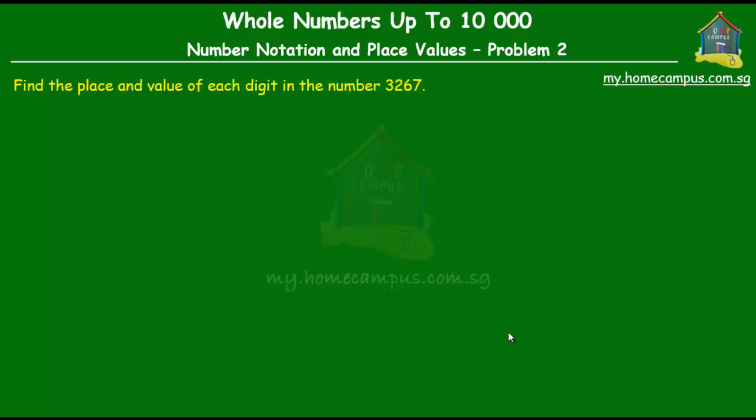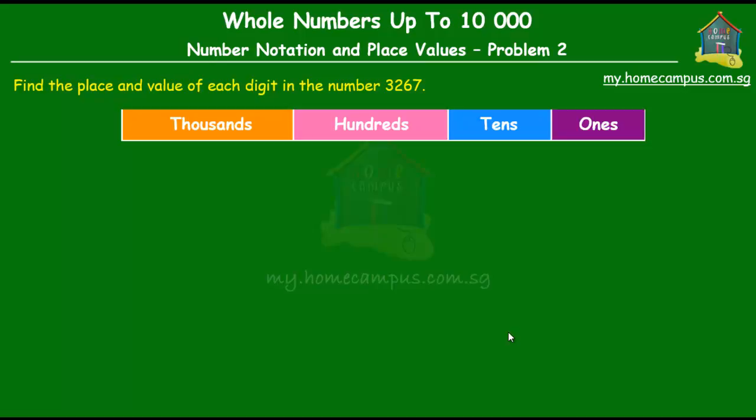In the previous lesson, we saw this chart that we call the place value chart or the place value table. We used it in the previous lesson to understand how to count building blocks. In this lesson, we'll use it to understand the place and value of each digit in the number 3267.